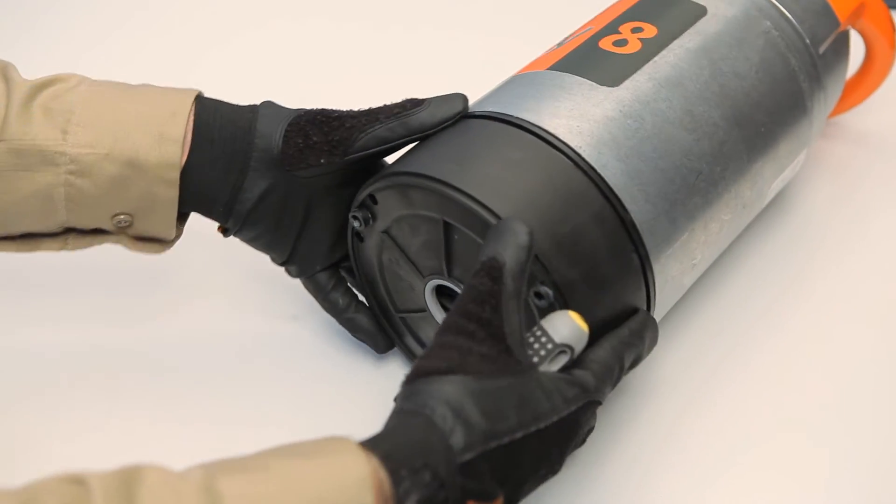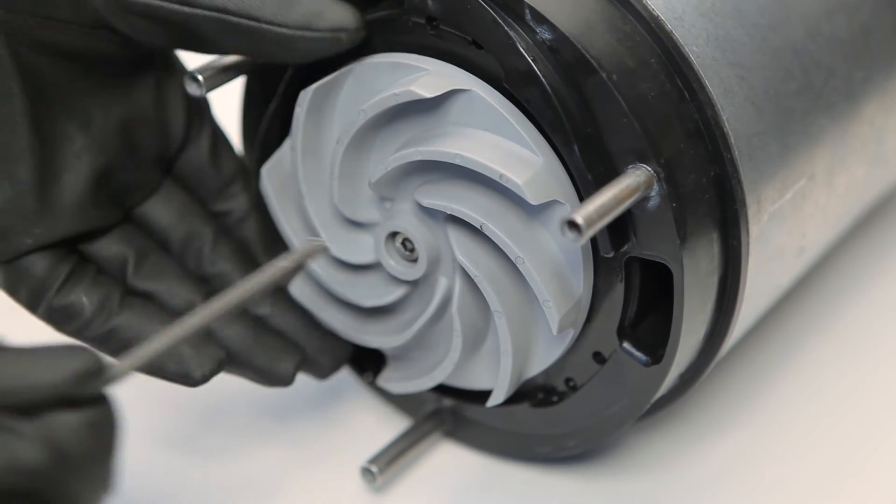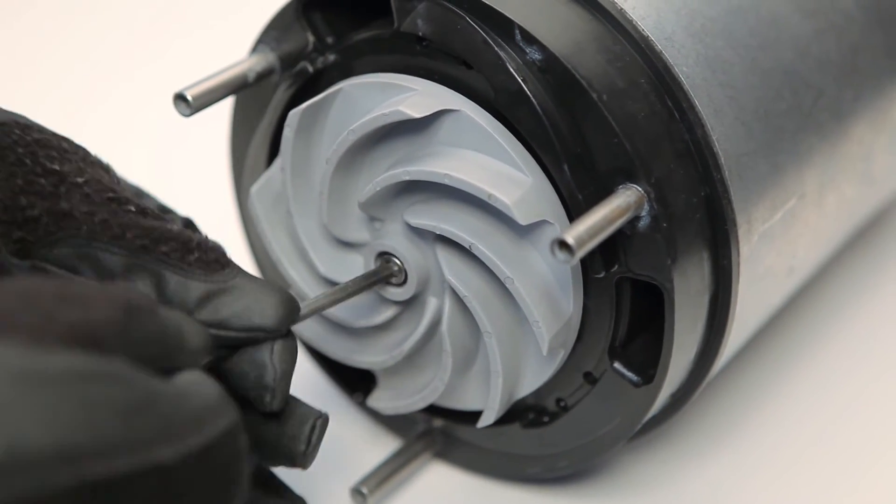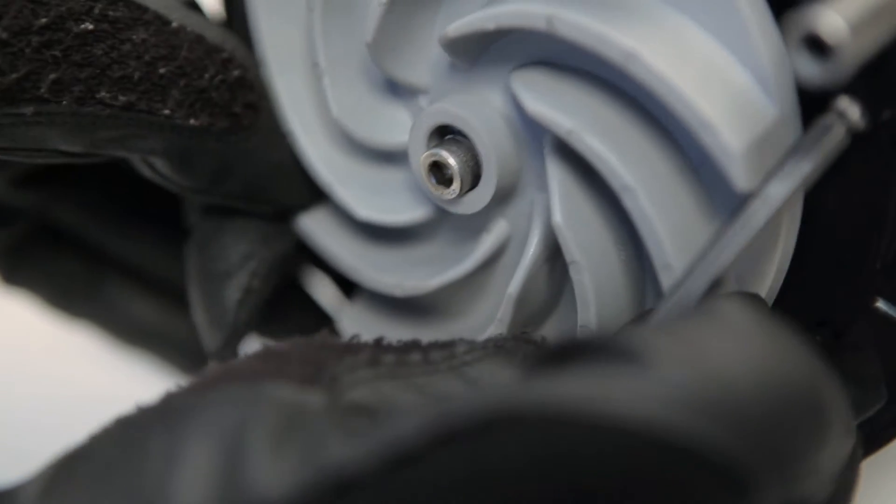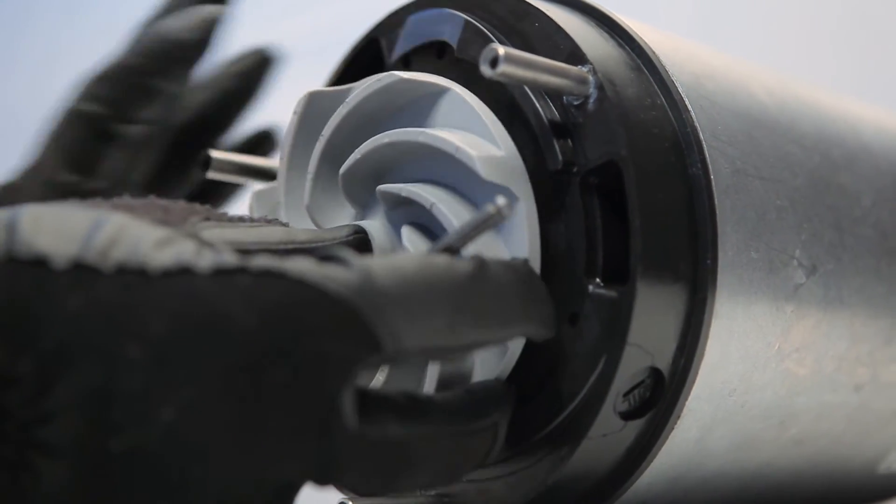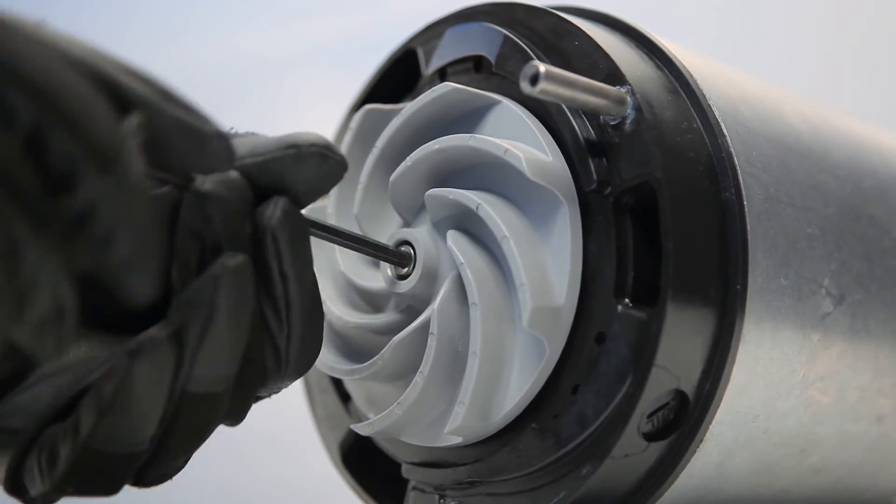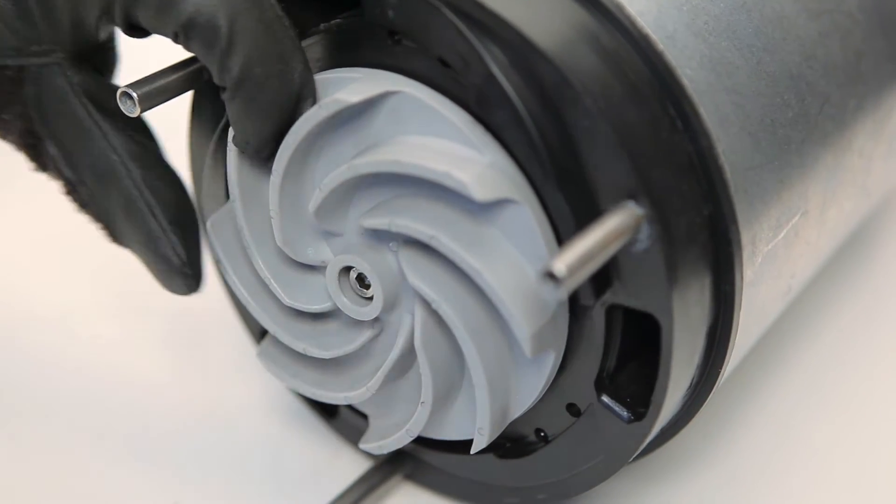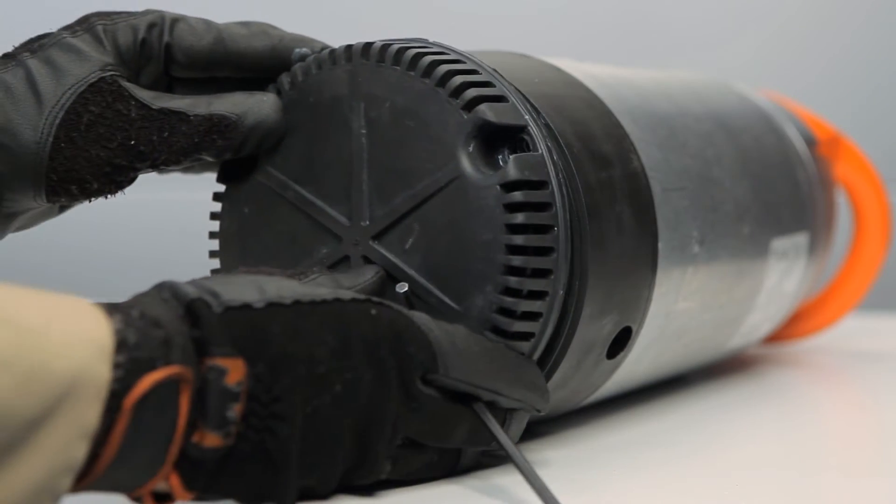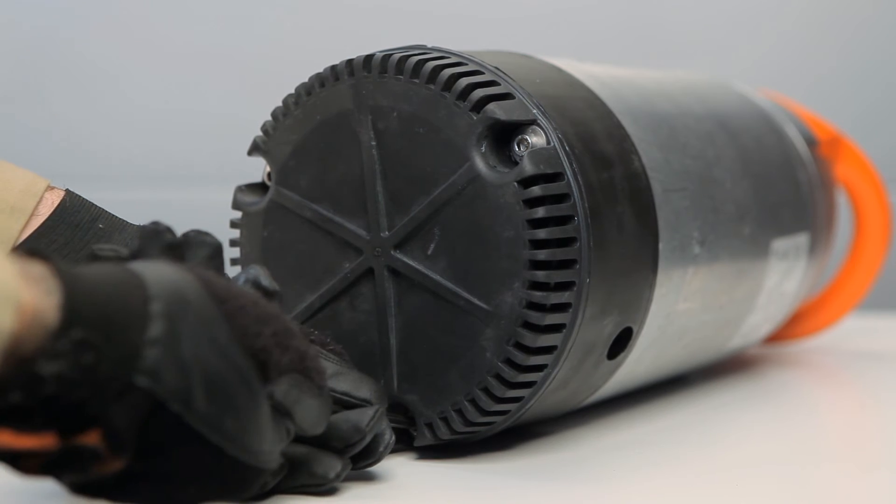Next, remove the lower diffuser, exposing the impeller. Using your Allen key, remove the worn or damaged impeller, and install the new impeller. Put the lower diffuser back in place and the strainer. Tighten the 3 strainer bolts, and you're done.